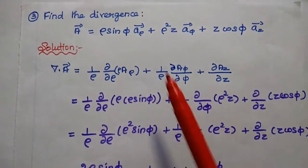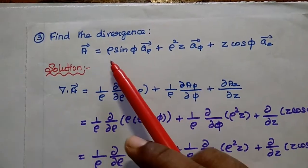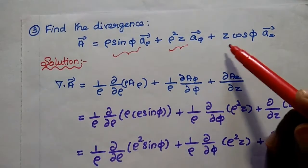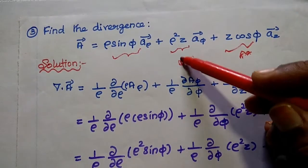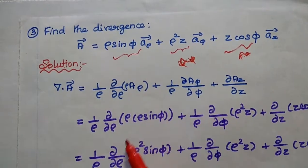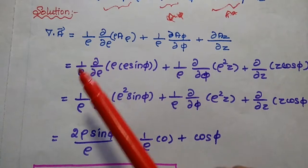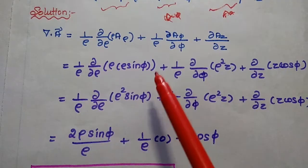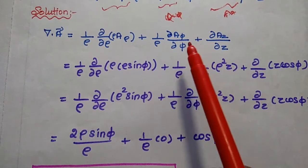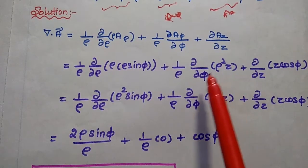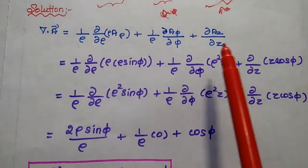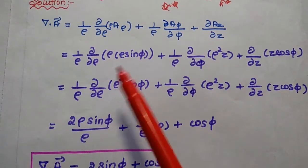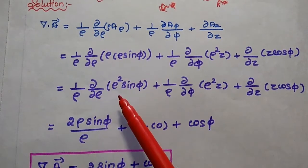Substituting the values: Aρ = ρ sinφ, Aφ = ρ²z, Az = z cosφ. So we get: (1/ρ) ∂/∂ρ(ρ · ρ sinφ) + (1/ρ) ∂/∂φ(ρ²z) + ∂/∂z(z cosφ). Simplifying the first term: ρ · ρ sinφ = ρ² sinφ.